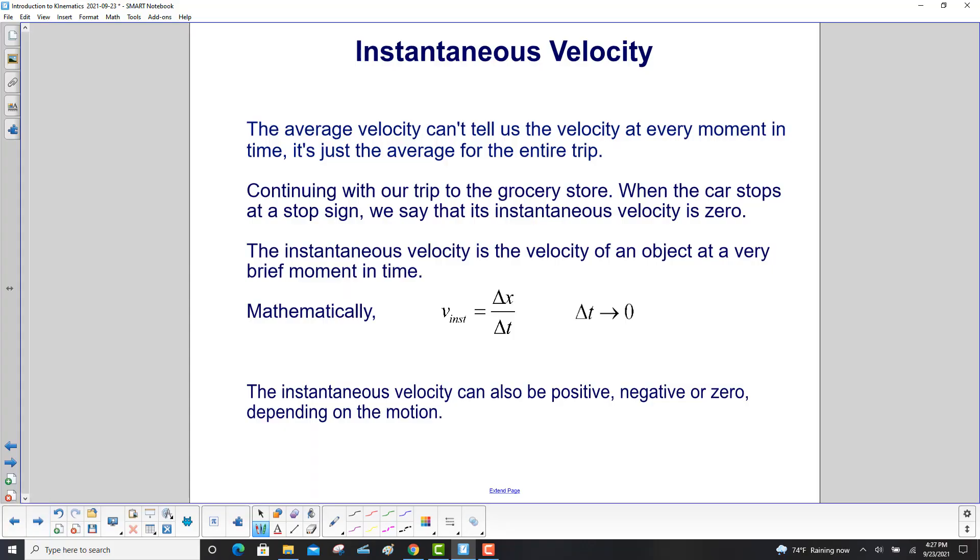And to further emphasize the instantaneous velocity, the average velocity can't tell us the velocity at every moment in time. It's just the average for the entire trip. Continuing with our trip to the grocery store, when the car stops at a stop sign, we say that its instantaneous velocity is zero. The instantaneous velocity is the velocity of an object at a very brief moment in time. Mathematically, we've got V instantaneous equals delta X over delta T. The same formula for the average velocity, but we shrink the time interval that we're looking for the velocity to a very, very, very tiny point, very close to zero. And again, the instantaneous velocity can either be positive, negative, or zero, depending on the motion.